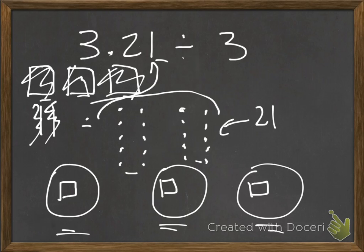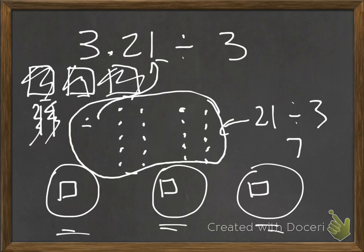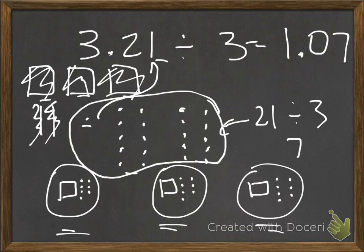I have twenty-one hundredths pieces to share among three groups. Twenty-one divided by three means there would be seven hundredths pieces in each group. So in each group I have one whole, zero tenths pieces, and seven hundredths pieces. Therefore, the quotient is one and seven hundredths.